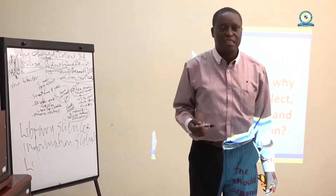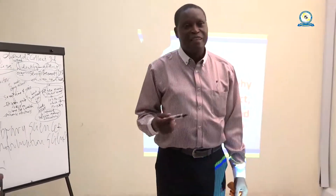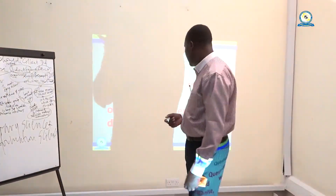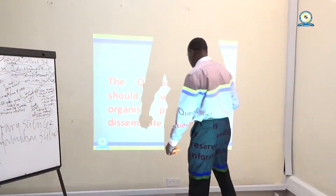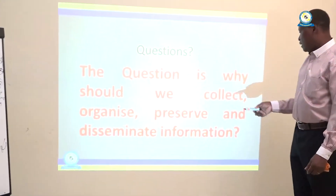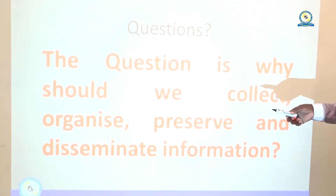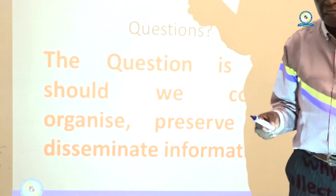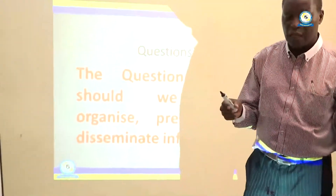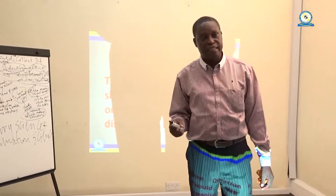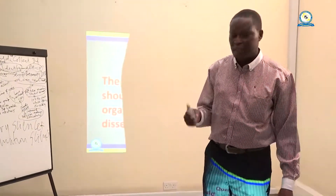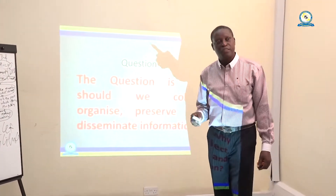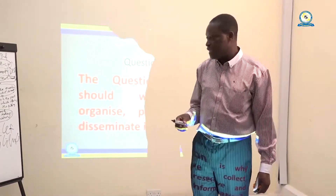It makes the library a niche — basically, a library is supposed to be a niche in order to attract users. On the dissemination part, we are disseminating information so that it can be used in society for solving problems and for educating the society.